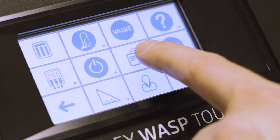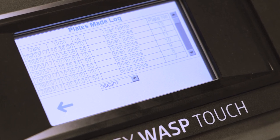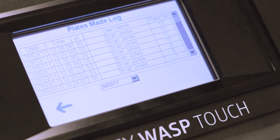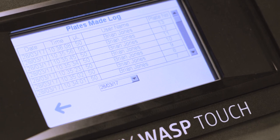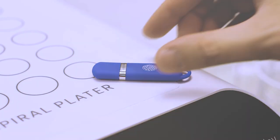For each plate, the touchscreen software records parameters including plate identification, dispensed volume, user name and the date and time of plate preparation. All records are PIN code protected and can be downloaded via USB.